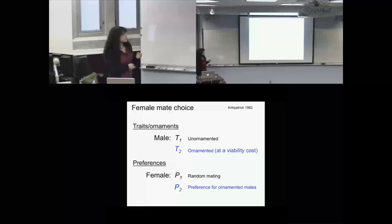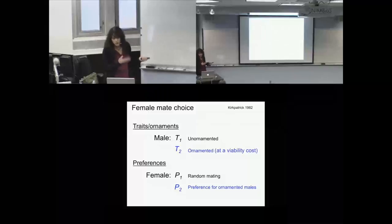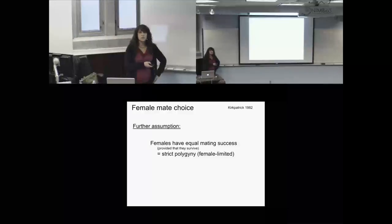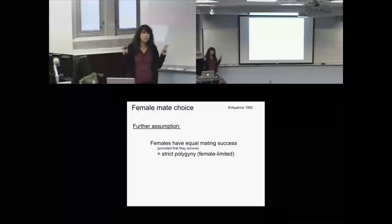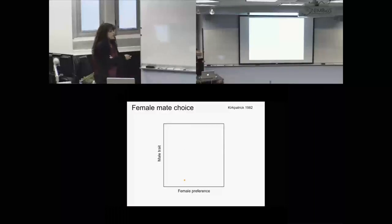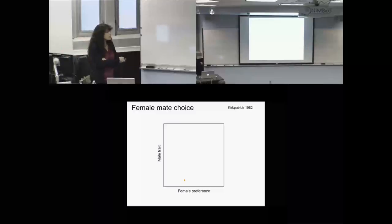The key biological assumption is that females have equal mating success provided they survive — strict polygyny, so every female has equal mating success. You can summarize the results with a graph: female preference on the x-axis and male trait on the y-axis. Russ Lande showed you can get something analogous with a mean preference and a trait mean. A population with a preference for male traits greater than the actual trait present in the population would be expected to move upward as the trait increases.